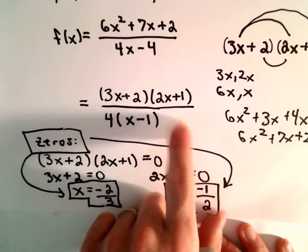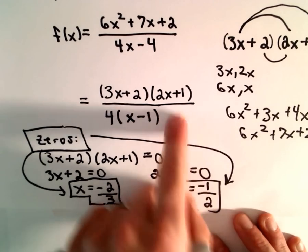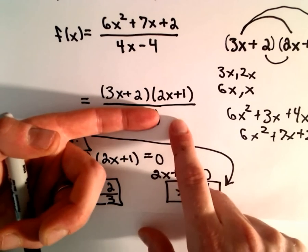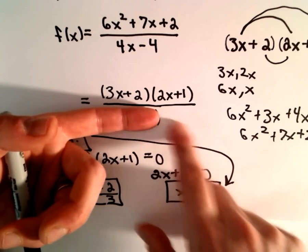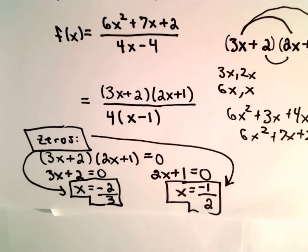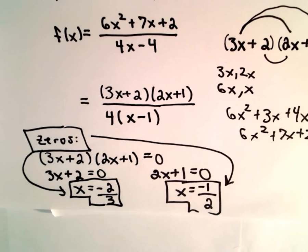Well, if that happens, x = -1/2 wouldn't be a zero, because you would also get zero in the denominator. You would get a zero in the denominator at x = -1/2, and then it would be undefined. That's why I'm commenting on the fact that there are no common factors.